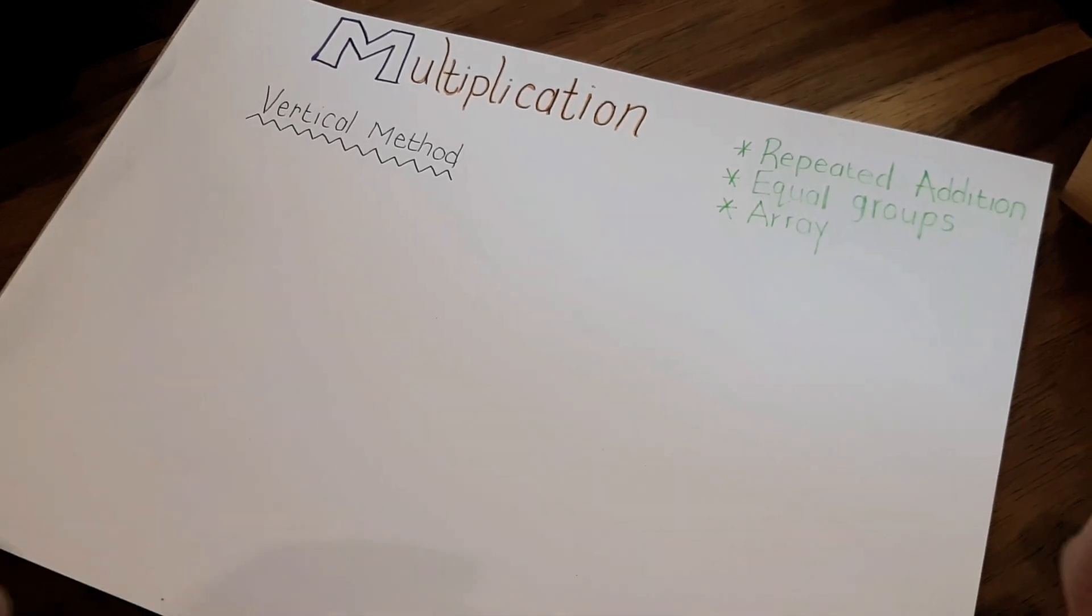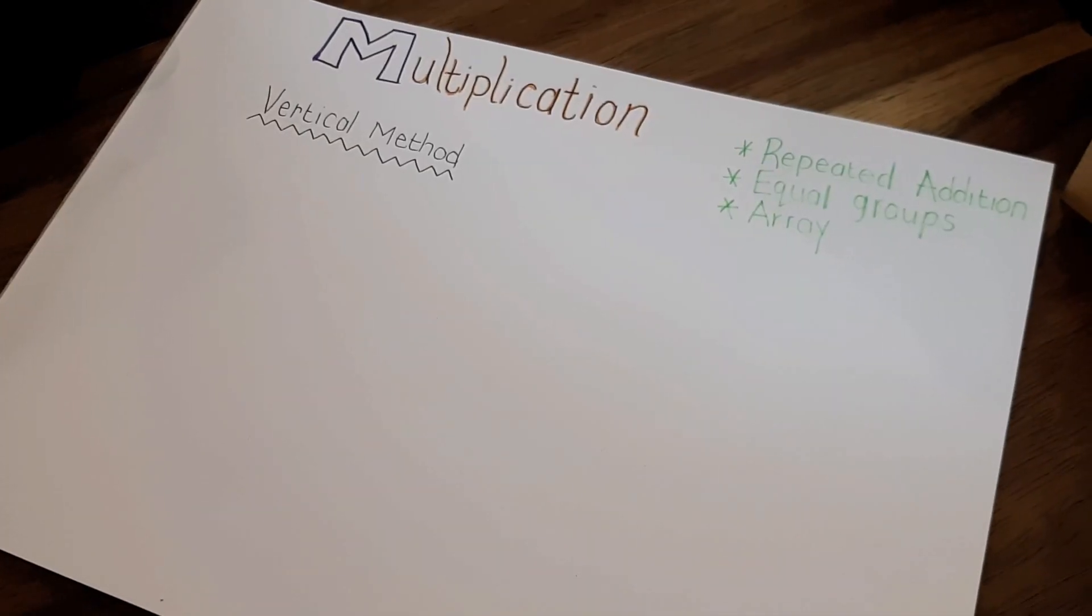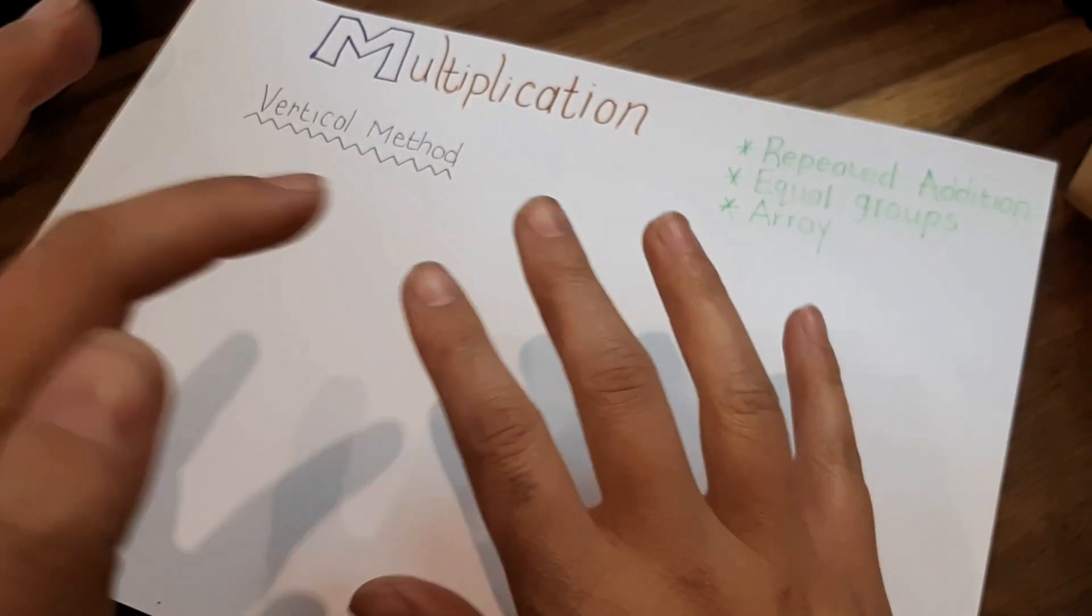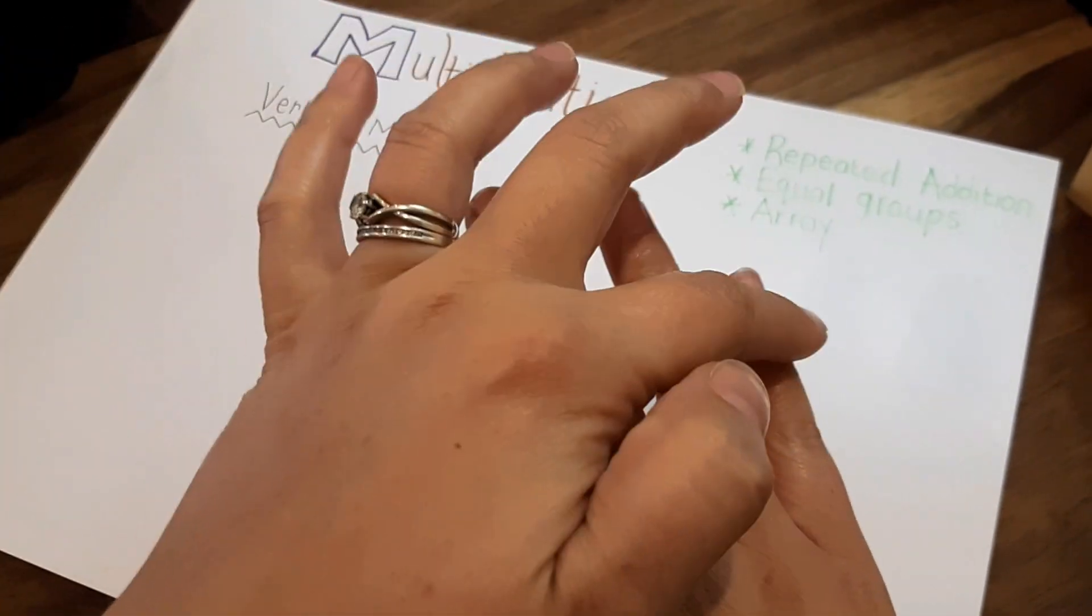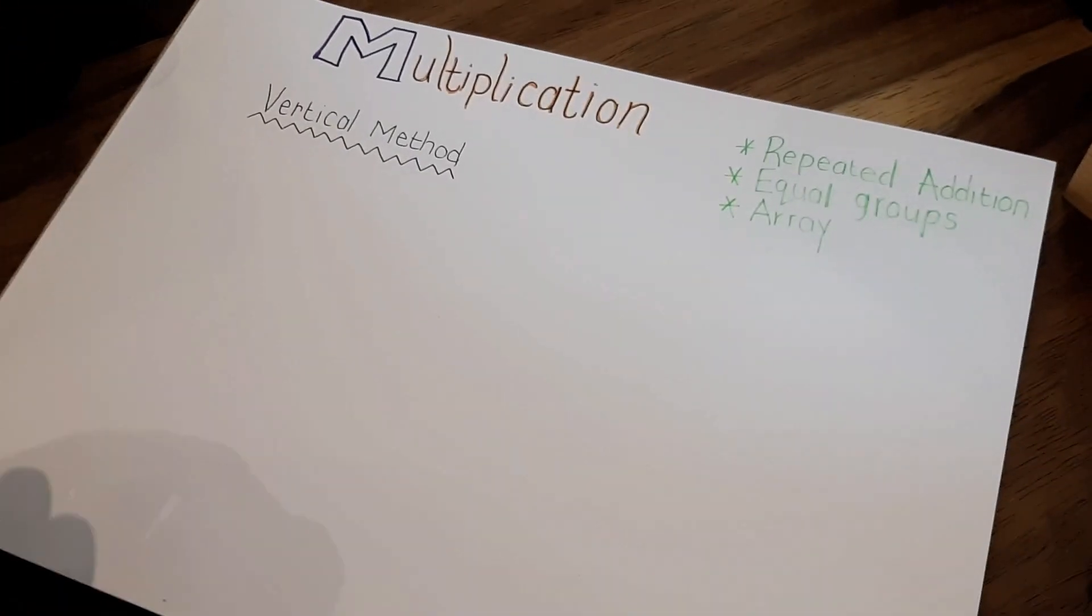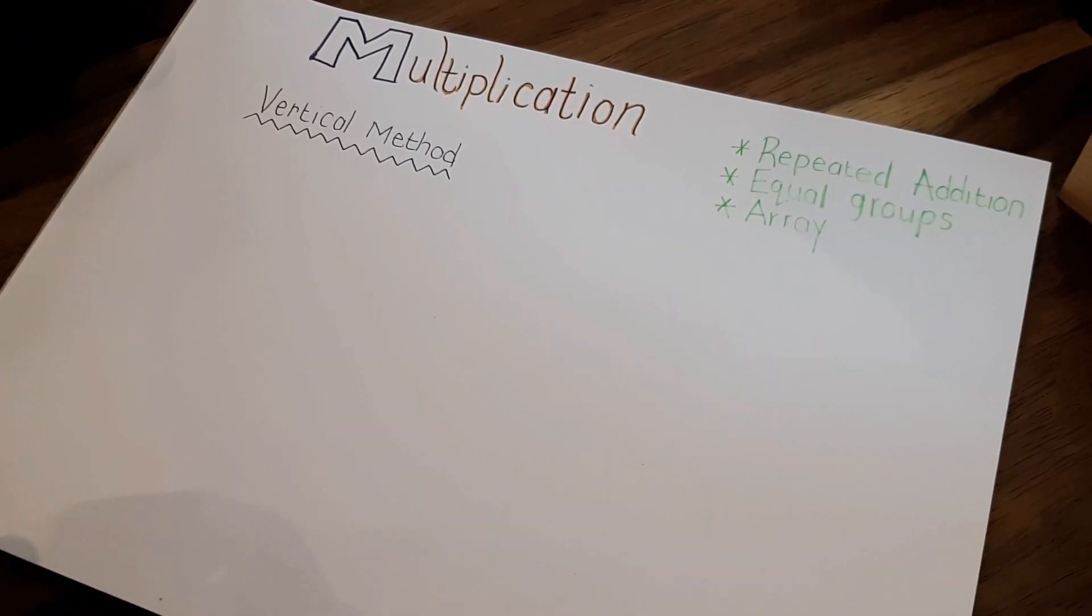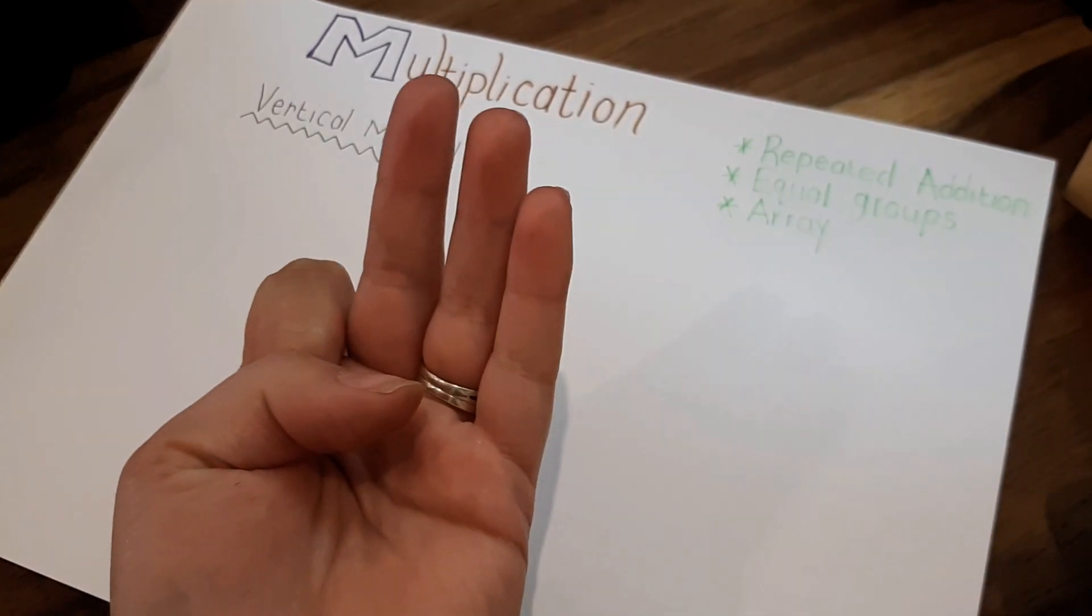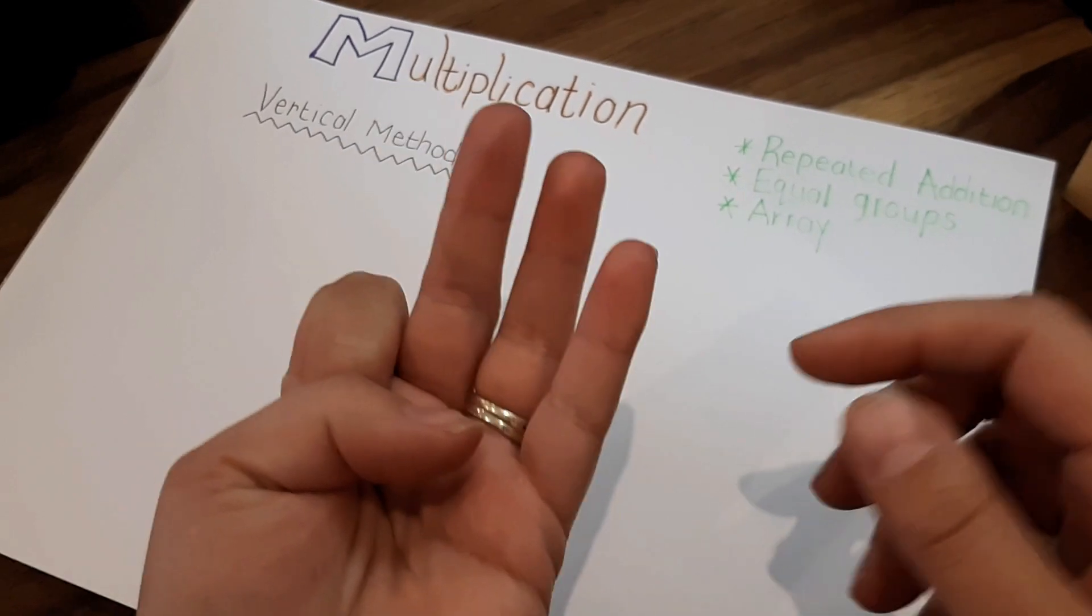When it gets to multiplication, we can define it as repeated addition. For example, if I say 2 plus 2 plus 2 plus 2, it's the same as saying 2 times 4, which is 8. Or we can talk about it as equal groups. For example, when there are three kids and each child must get three lollipops, then it's 3 times 3, which is 9.